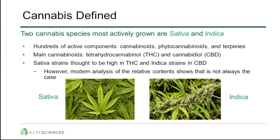To give a very quick definition of cannabis, the most actively grown species are sativa and indica. There are hundreds of active components in cannabis beyond THC and cannabidiol, which are the main ones, but there are various phytocannabinoids and terpenes. Although sativa strains have been thought to be high in THC and indica strains high in CBD, modern analysis reveals that's not always the case, but oftentimes it is.